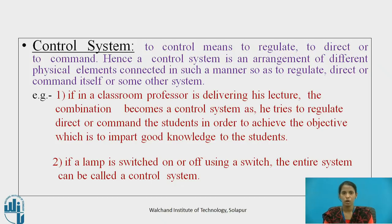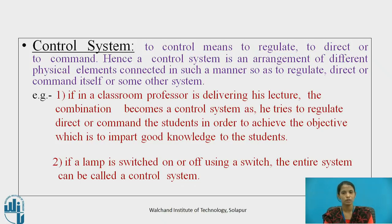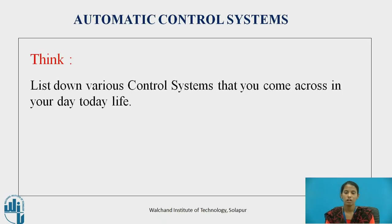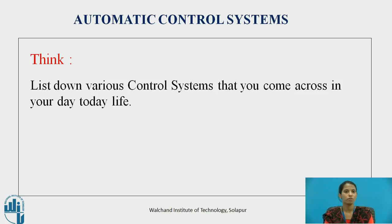If in a classroom a professor is delivering his lecture, the combination becomes a control system as he tries to regulate, direct, or command the students in order to achieve the objective — which is to impart good knowledge. If a lamp is switched on or off using a switch, the entire system can be called a control system. I want you to pause the video for a few seconds and think about different control systems you come across in your day-to-day life.